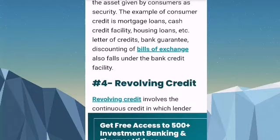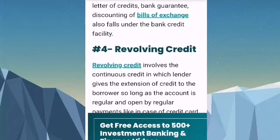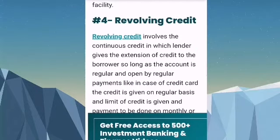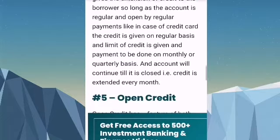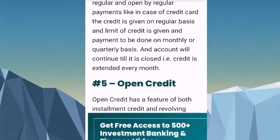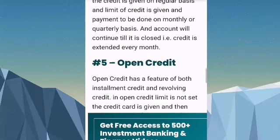Number four is revolving credit. Revolving credit involves a continuous credit arrangement in which the lender gives an extension of credit to the borrower as long as the account is regular and kept open by regular payments. In the case of a credit card, credit is given on a regular basis, a credit limit is set, and payment is to be done on a monthly or quarterly basis. The account continues until it is closed.